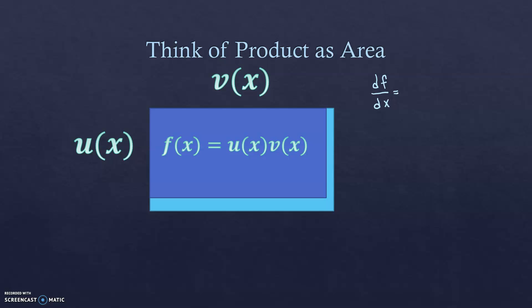To find the rate of change, we want df — the amount f changed when x changes by a tiny bit — and then divide by that tiny bit. We use the letter d because we're thinking of the change in x as infinitely small, as h goes to zero. So instead of delta x, we call it dx to represent the tiniest change.